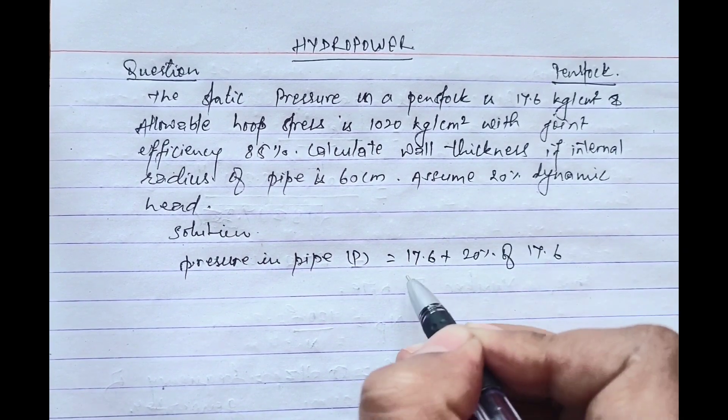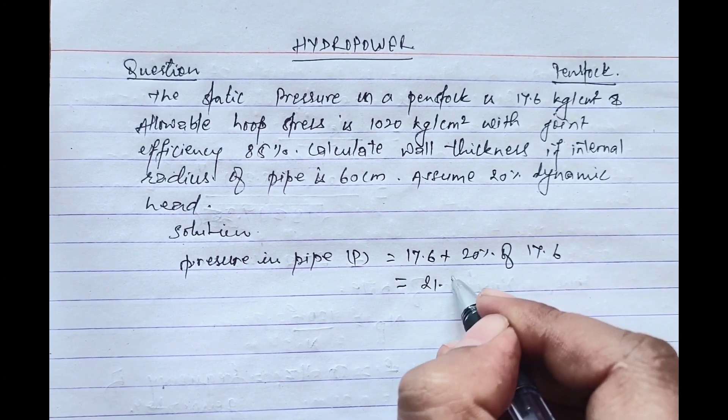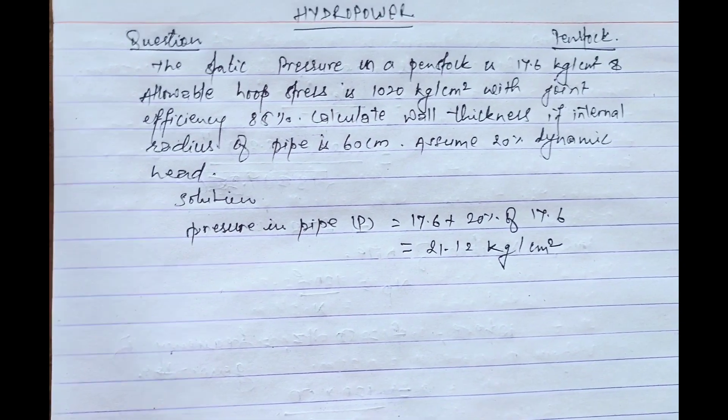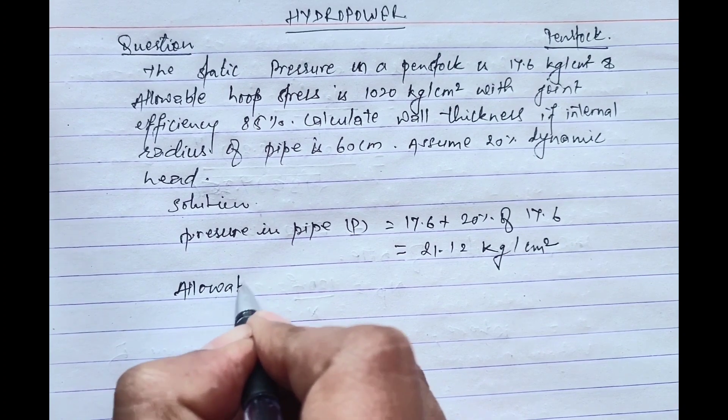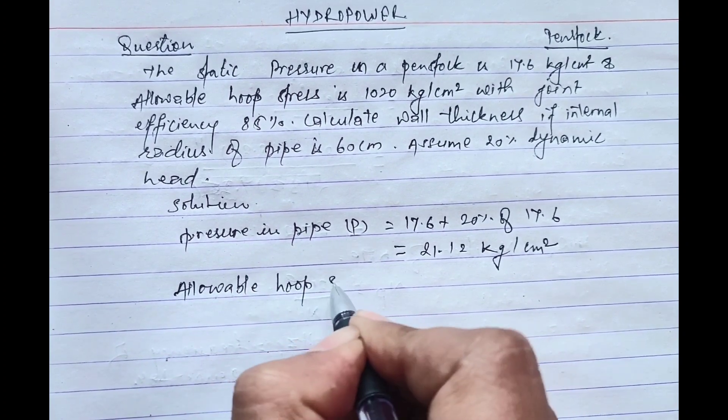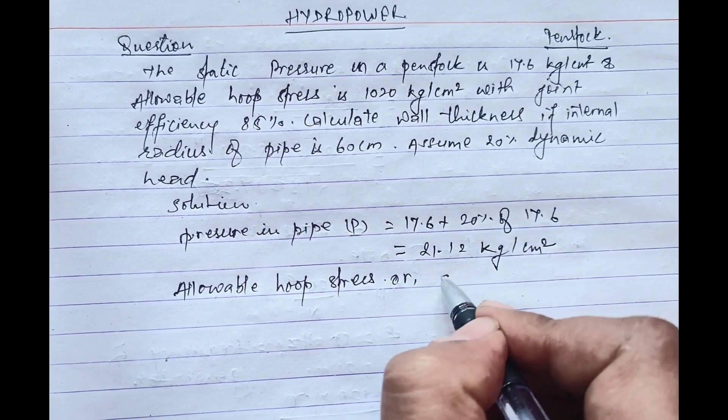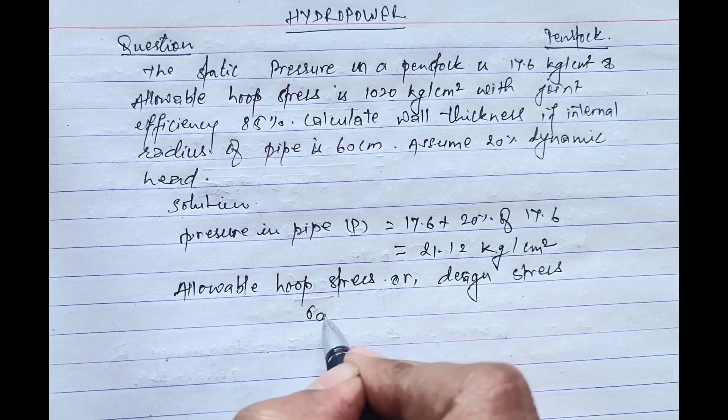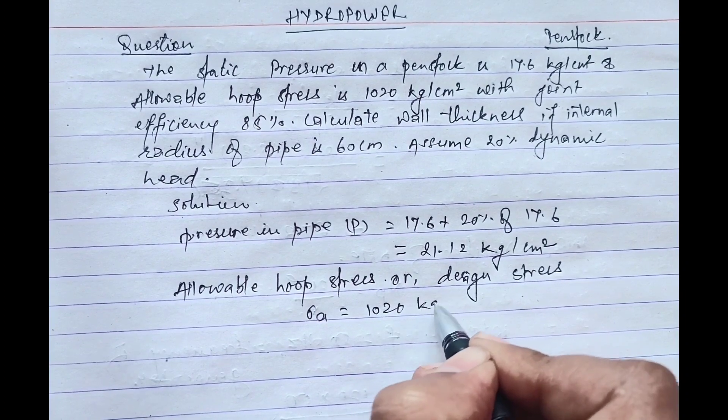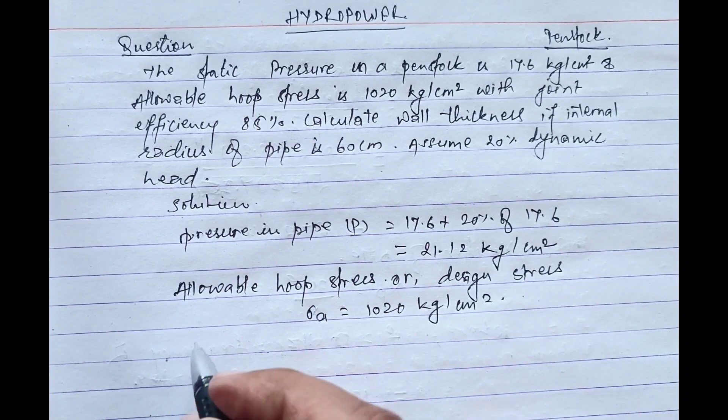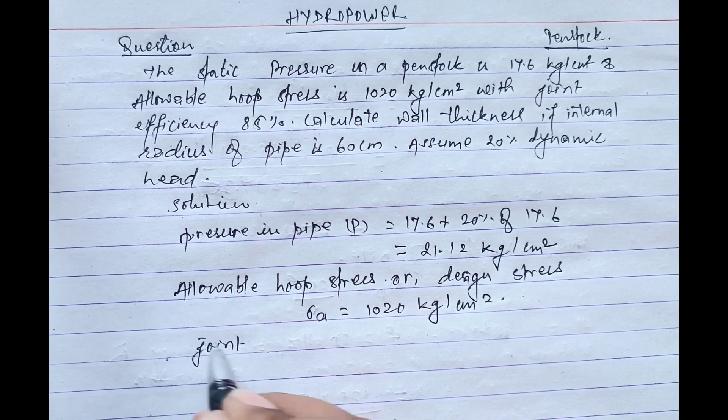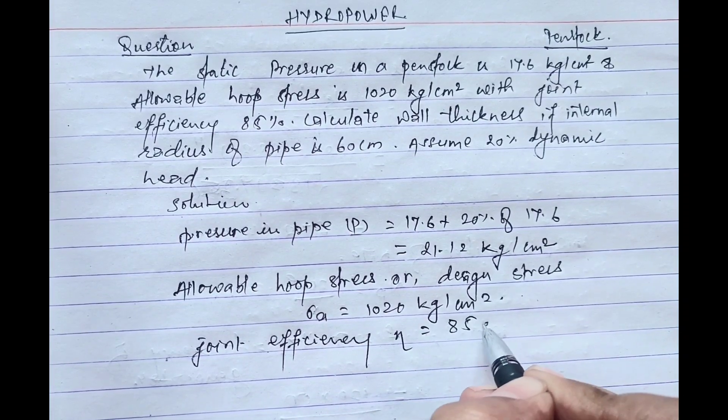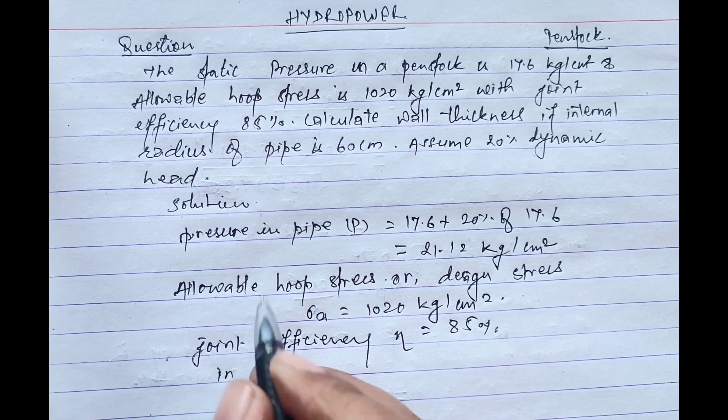Allowable hoop stress or design stress σ_a equals 1020 kg per cm². Joint efficiency equals 85 percent. Internal radius...